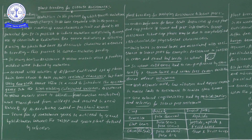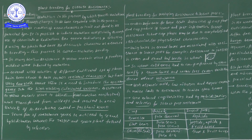Conventional plant breeding methods were discussed in the previous video. Now let us study mutational breeding. Mutational breeding is important from the point of view of public examinations as well as the NEET examination. Mutation is a process by which genetic variations are created.